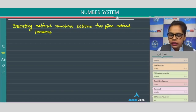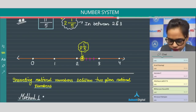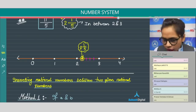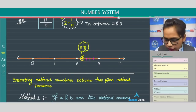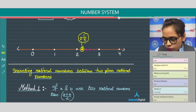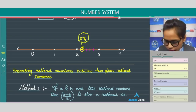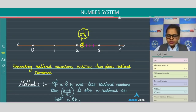Let's start with Method Number One, which you have already been taught in Class 8. So Method One: if a and b are two rational numbers, then (a + b) / 2 is also a rational number between a and b.